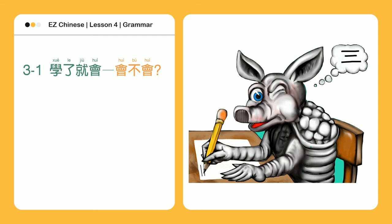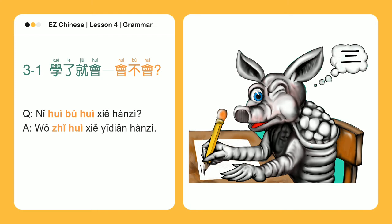会不会 — Are you able to or not? 你会不会写汉字? — Are you able to write Chinese characters? 我只会写一点汉字 — I can only write a few.